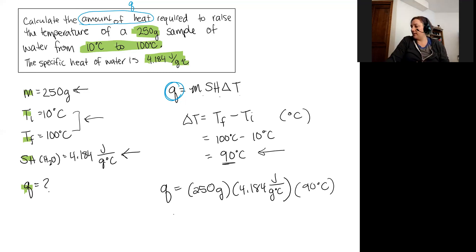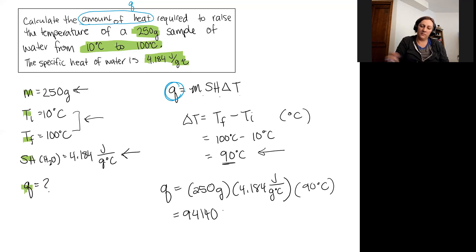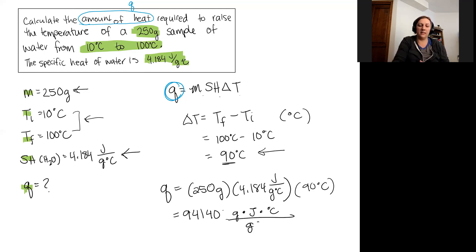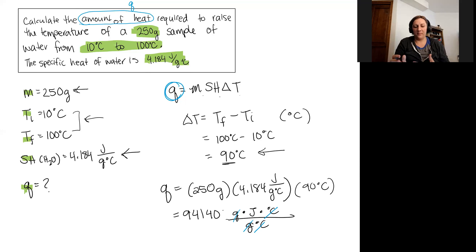Plugging that into my calculator, I get a value of 94,140. For units, I have grams times joules times degrees Celsius divided by grams times degrees Celsius — the grams cancel out and the degrees Celsius cancels out, leaving units of joules.